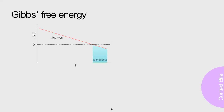We can see this if we actually look at how the Gibbs energy changes as a function of temperature. To simplify this slightly, I assume that both delta H and delta S are reasonably constant over the temperature range shown. From our Gibbs equation, we see that the gradient of a plot of delta G against T has a gradient of minus delta S.